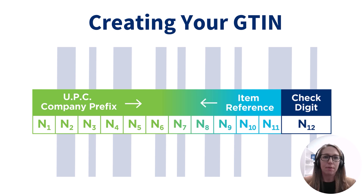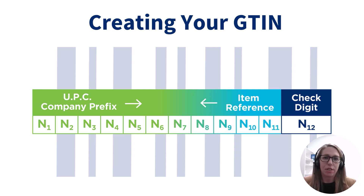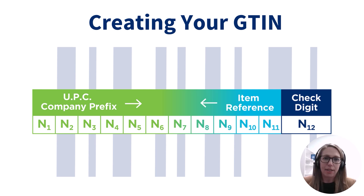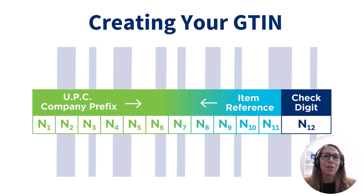There are three parts of a GTIN. First, the UPC Company Prefix, which GS1US licenses only to you — this is registered to your company and is the basis for your GTINs. Second, the item reference, which you assign yourself at DataHub to identify the particular product. Third, the check digit — a final digit calculated from the other digits, used to verify the data has been correctly composed. You do not need to calculate the check digit yourself; our platform, GS1US DataHub, does that automatically using GS1 logic and calculators.